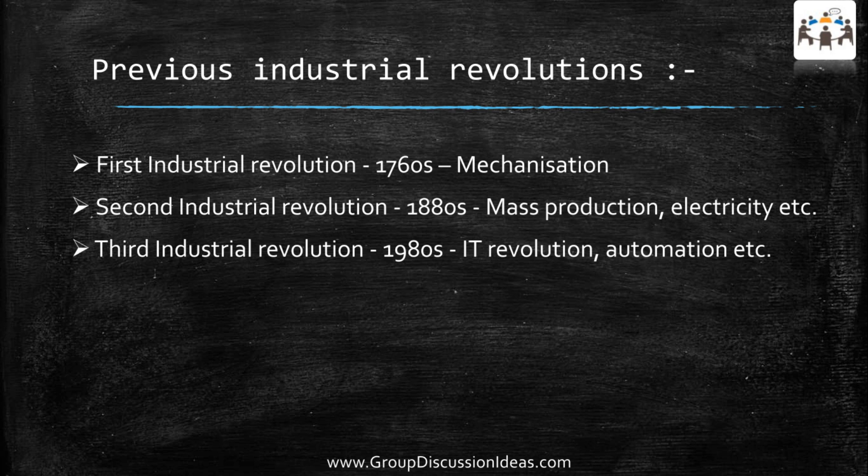Let's see a brief introduction about previous industrial revolutions. The first industrial revolution was started in the 1760s. It is the transition from hand production methods to machines, so mechanization is the first industrial revolution.